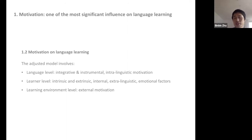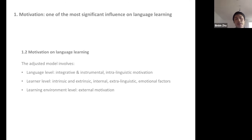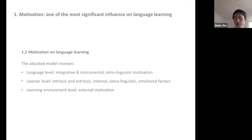Extrinsic motivation comes from external sources — it's not about the learning activity itself. The third level is the learning environment level: some learners prefer offline or online learning, which relates to their individual learning style and preferences.